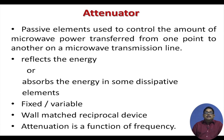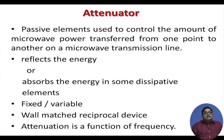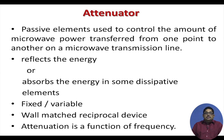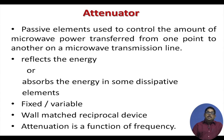Attenuators are passive elements used to control the amount of microwave power transferred from one point to another on a microwave transmission line. You have two options: either you reflect the energy, or you absorb the energy in some dissipative elements. Generally, absorption is used.